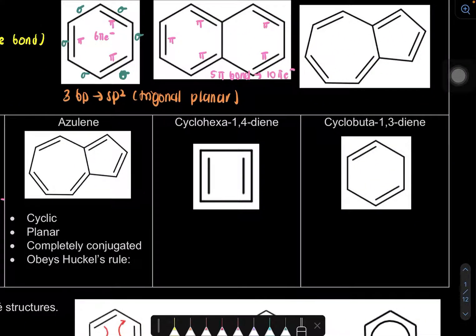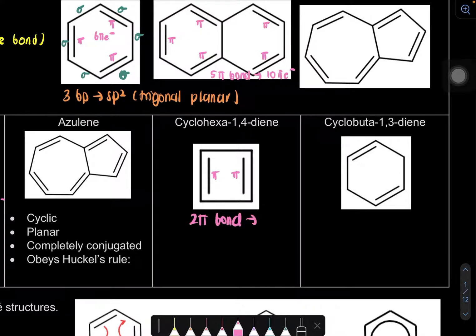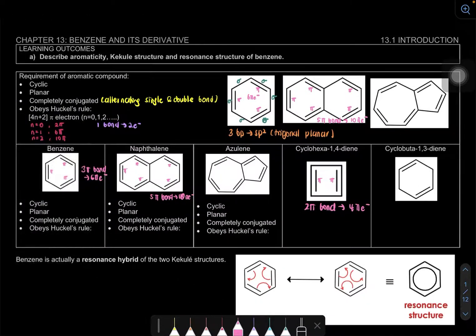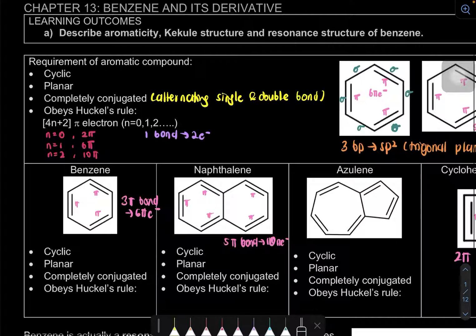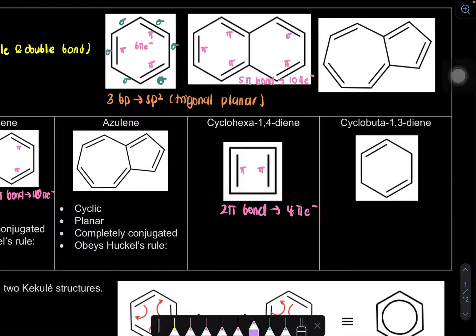Now let's look at cyclo-1,4-hexadiene. It is cyclic and planar, and it has alternating double and single bonds. However, does it obey Hückel's rule? It has 2 pi bonds, meaning only 4 pi electrons. Looking at the rule: valid values are 2, 6, 10 — there is no 4. So this compound does not obey Hückel's rule, meaning it is not an aromatic compound.